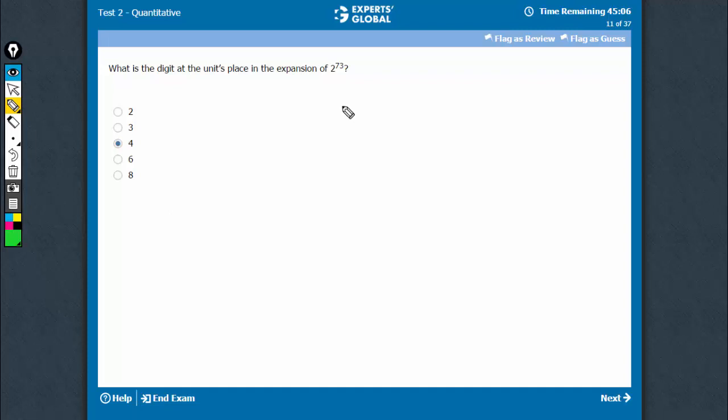So, we can observe that a unit's place repeats after every 4 powers of 2. See, this is 2 here, 4, 8, 16, so 6 and then 32.